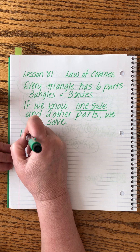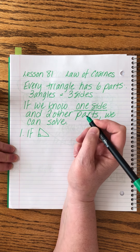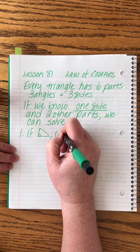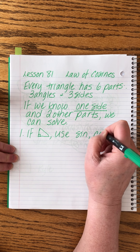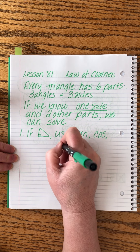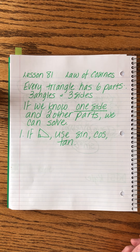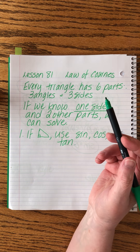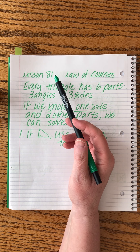Tool one: if we have a right triangle, we can use sine, cosine, and tangent. We've been doing that for quite a while — I'd say since around lesson 43 of algebra two, so a good long time. But we have to have a right triangle in order to do that.